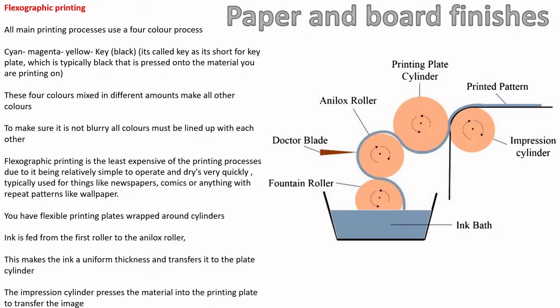The next three printing processes are more mass-production style. All main printing processes use the same four colors: cyan, magenta, yellow, and key — key is black, short for 'key plate,' a legacy name from early printing. With those four colors in any mixture, you can make all other colors. If a printer is low on one color it won't print the others. Everything must be precisely lined up, otherwise printing will appear blurred or smudged.